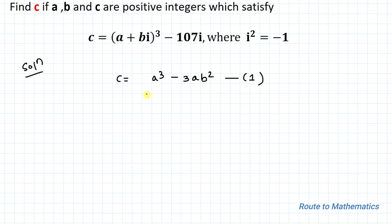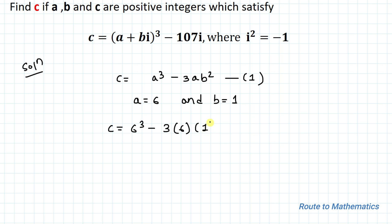From equation 1, c equals a cubed minus 3ab squared. Substituting a equals 6 and b equals 1: c equals 6 cubed minus 3 times 6 times 1, which equals 216 minus 18, giving c equals 198. Thus our answer is c equals 198. I hope you understood the solution — thanks for watching, please subscribe to my channel and hit the like button for more such interesting questions.